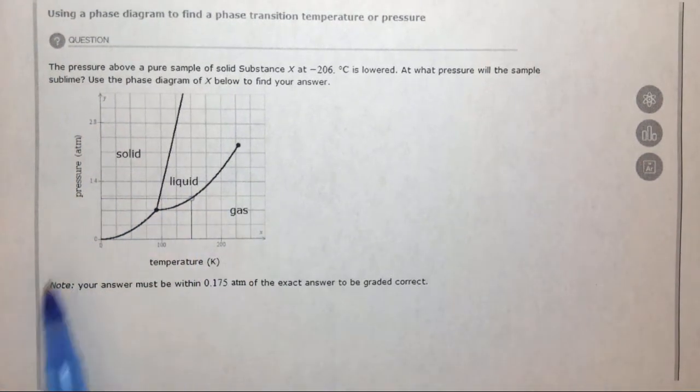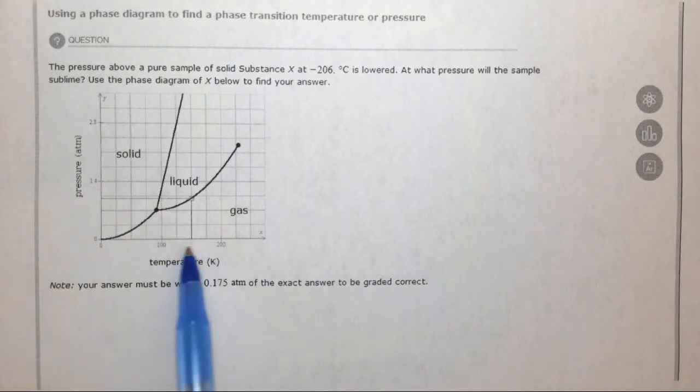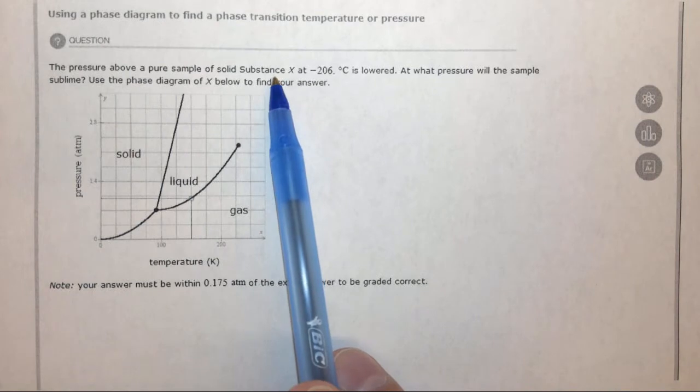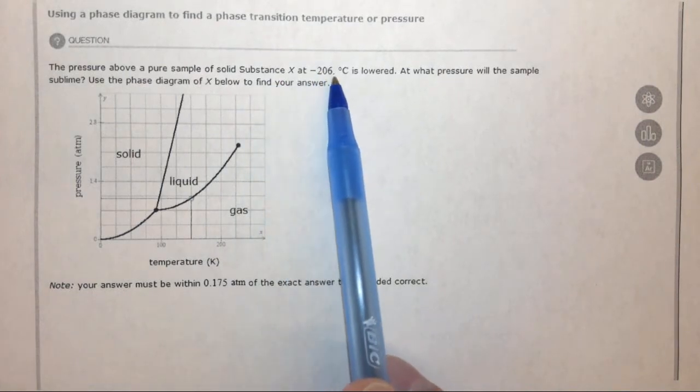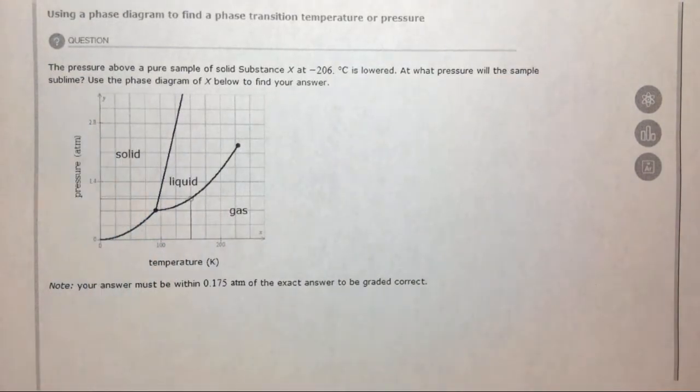In this problem we're given a phase diagram with pressure in atmospheres on the y-axis and temperature in Kelvin on the x-axis. It says the pressure above a pure sample of solid substance X at -206°C is lowered. At what pressure will the sample sublime?